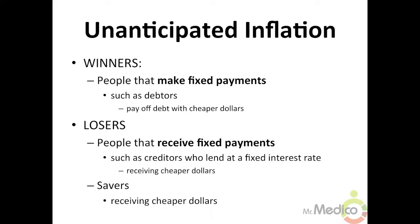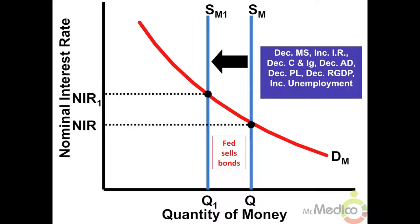When inflation occurs unexpectedly, some people will benefit and some will not. People that make fixed payments, such as debtors, gain from sudden inflation because they pay off debt with cheaper dollars. If debtors borrowed at a fixed interest rate, the purchasing power of the loan principal has decreased. People that receive fixed payments, such as creditors who lend at a fixed interest rate, lose from sudden inflation because they are receiving cheaper dollars. Therefore, people that earn fixed income will not benefit from unanticipated inflation.